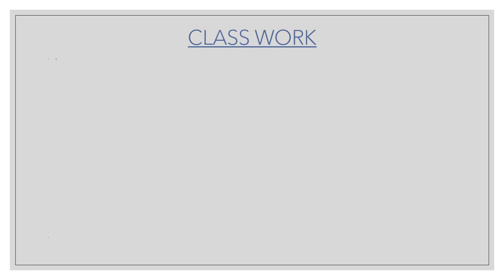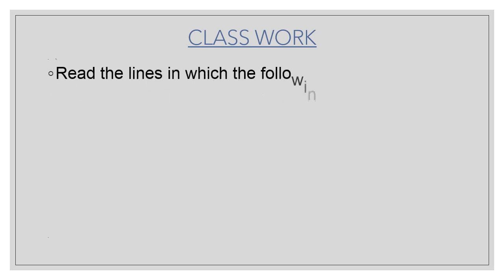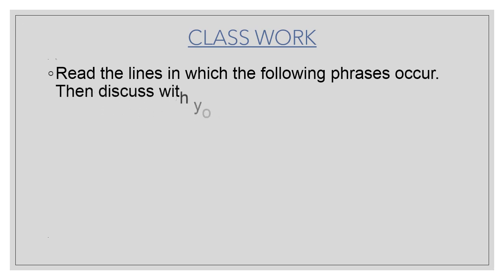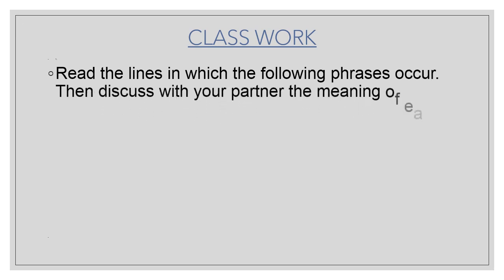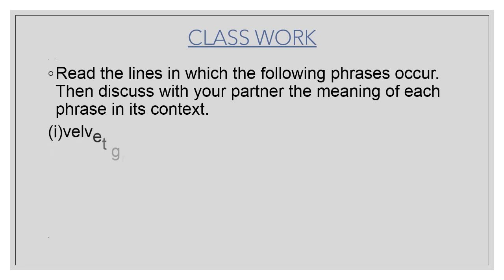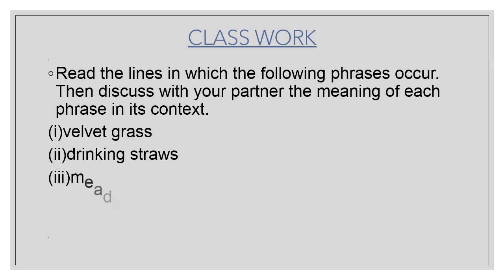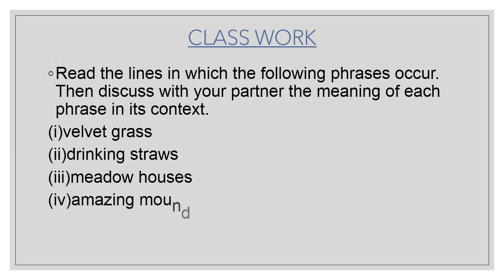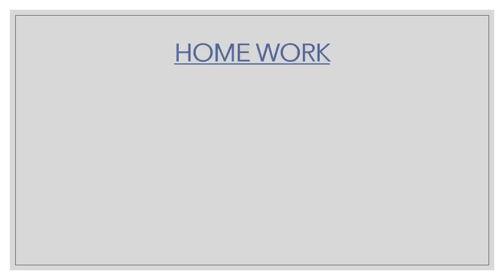The next slide is classwork, which we are going to discuss in the online class. Read the lines in which the following phrases occur, then discuss with your partner the meaning of each phrase in its context. The phrases are: one — velvet grass; two — drinking straws; three — meadow houses; four — amazing mound; five — fuzzy head. You have to find the meaning of each phrase and we'll be discussing them in the online class.